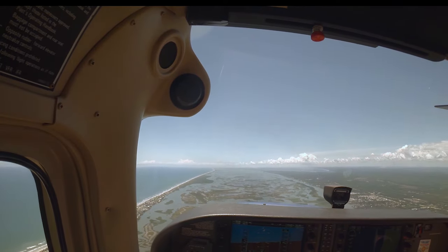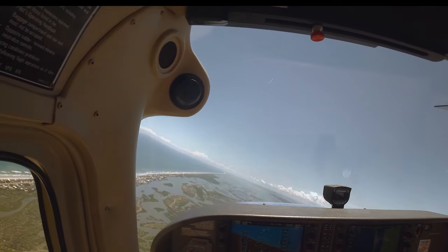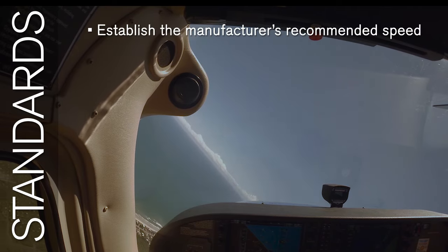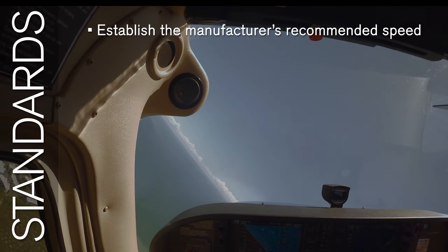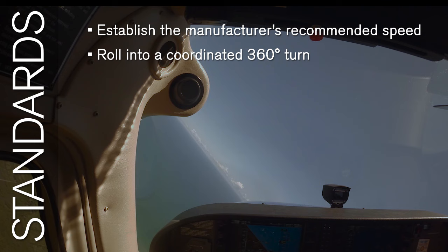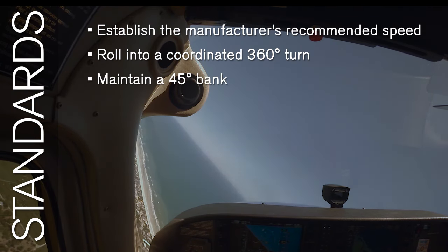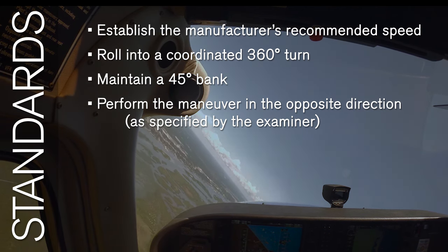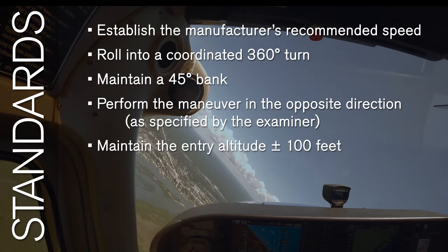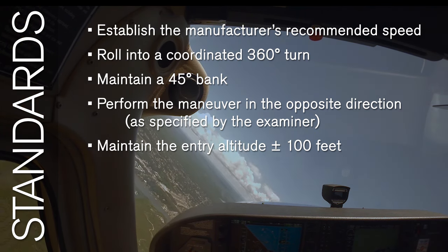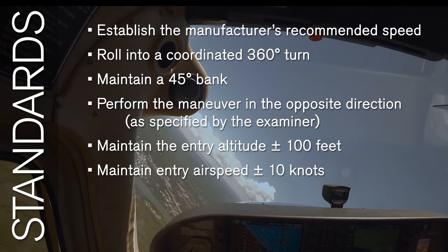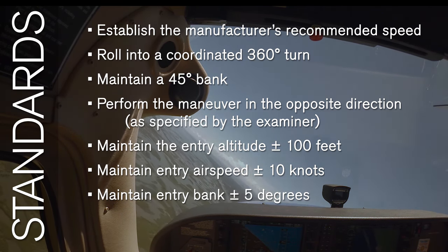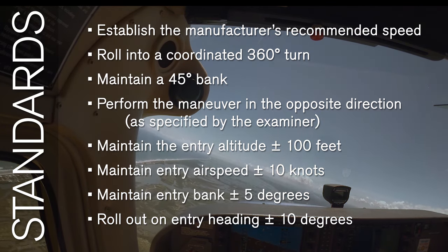Now that we've covered how to fly the maneuver, let's look at the end goals for your skills in performing steep turns. The standards for the end-of-course checkride include: establish the manufacturer's recommended speed, roll into a coordinated 360-degree turn, maintain a 45-degree bank, perform the maneuver in the opposite direction as specified by the examiner, maintain the entry altitude plus or minus 100 feet, maintain entry airspeed plus or minus 10 knots, maintain entry bank plus or minus 5 degrees, and roll out on entry heading plus or minus 10 degrees.